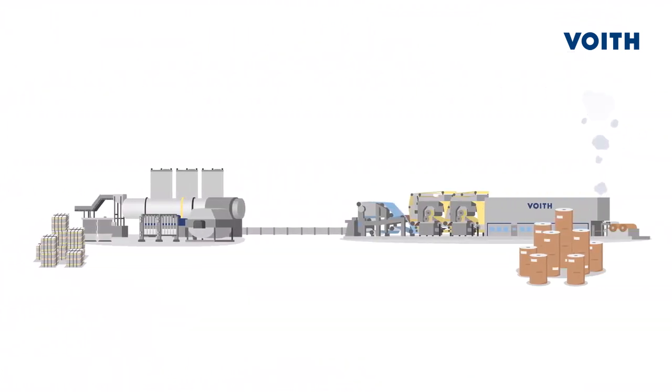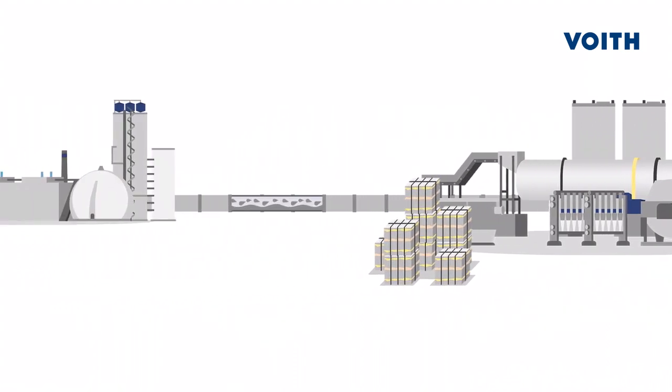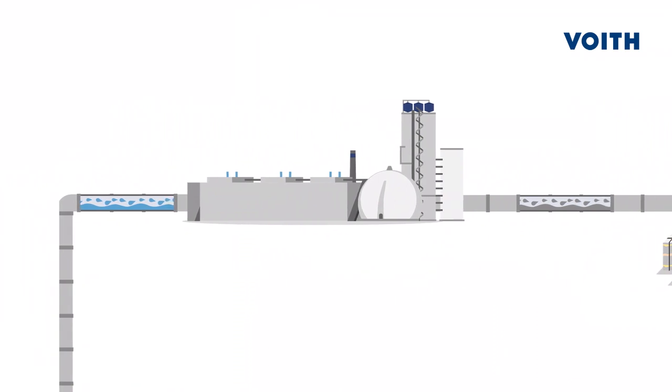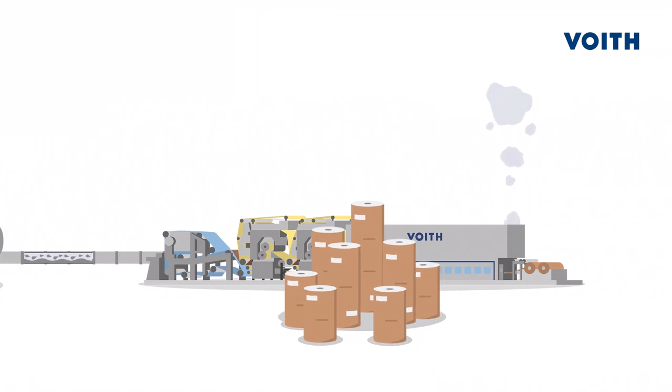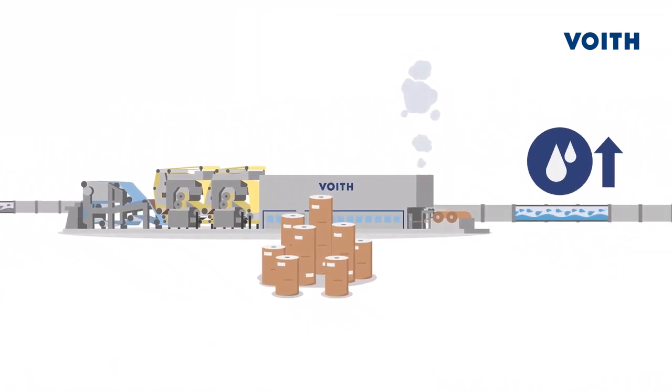There are two essential processes at a conventional paper mill. First, the recovered paper must be treated in the stock preparation system using water, while the effluent water is subsequently purified in an effluent treatment plant and drained. The paper machine produces new paper from the prepared stock suspension, a process that requires large amounts of fresh water.